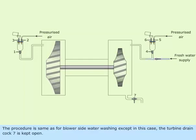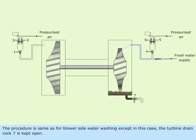The procedure is same as for blower side water washing, except in this case, the turbine drain cock 7 is kept open.